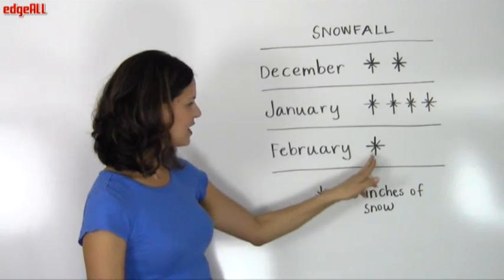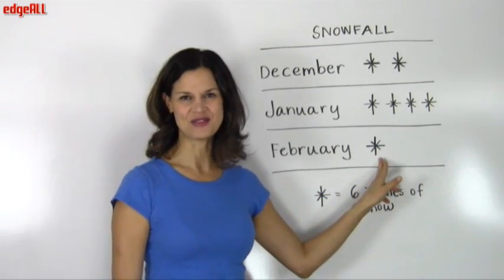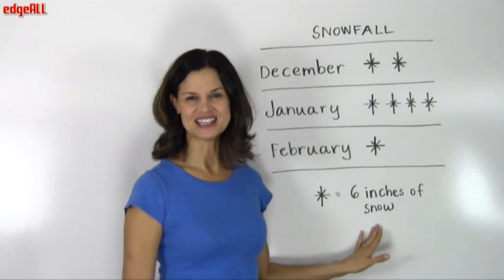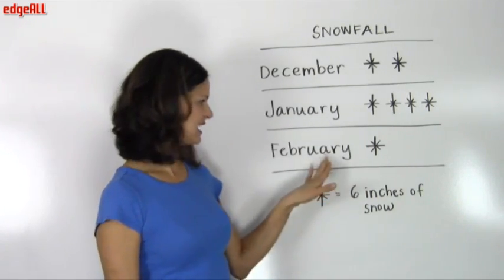And for February, we only have one snowflake. And that tells us that just six inches of snow fell in February.